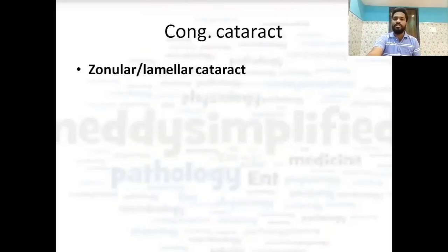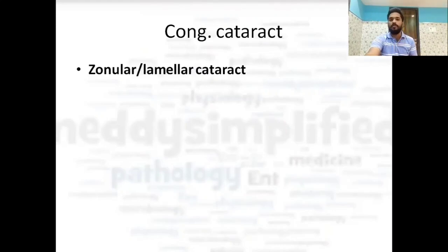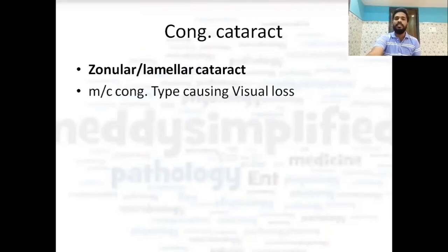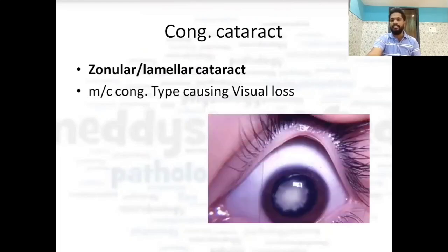Going further in congenital cataract, this is zonular or lamellar cataract. It is the most common type of congenital cataract which causes blindness or loss of vision in the child. So the most common congenital type causing visual loss is zonular or lamellar cataract.